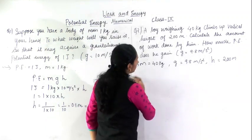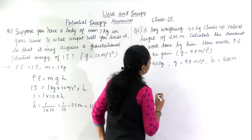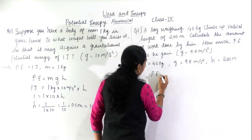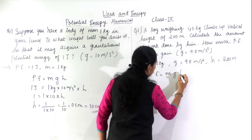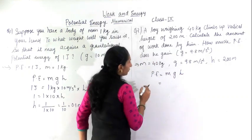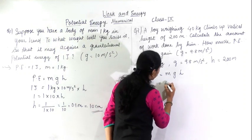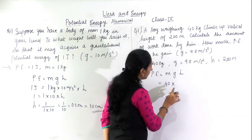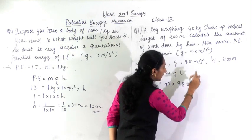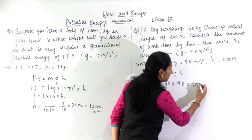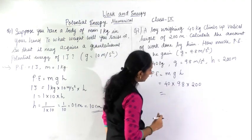We will solve here. What will be the formula? The same formula we will take: potential energy equals mgh. We have to find the potential energy and work done. What is the m? Mass of the boy is 40 kg, acceleration due to gravity 9.8 you have to take, and height you have to take 200 and you have to solve this.